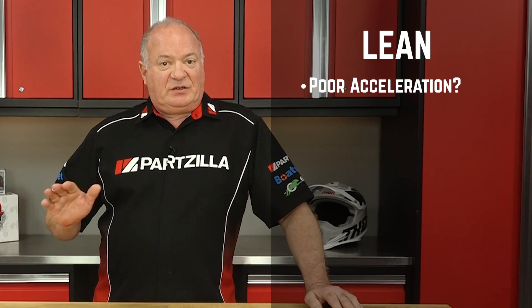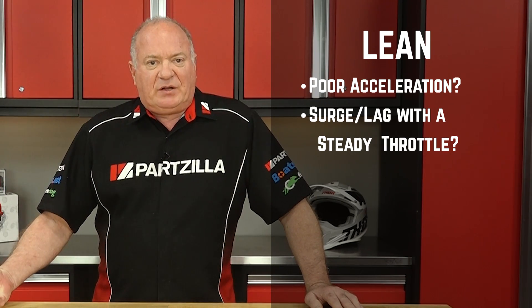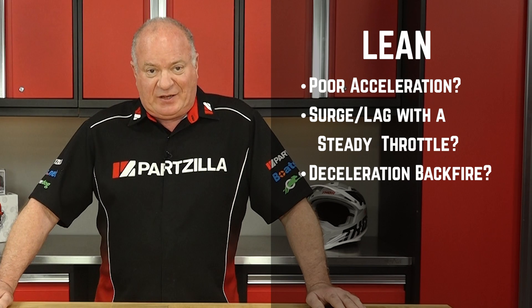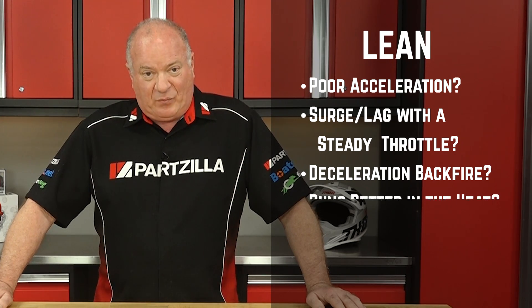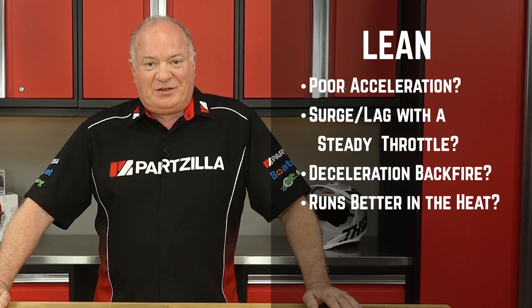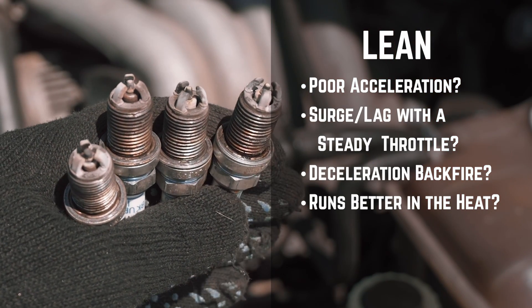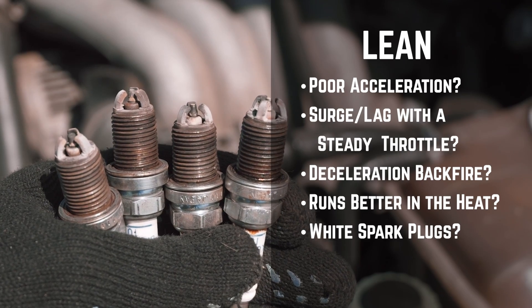Now let's look at the other side of the coin — what would a lean running engine look like? From a throttle standpoint, it might be hard to get on it really quick and it won't accelerate like it should. You might also feel the engine surging and then lagging as you hold a steady partial throttle. As for the exhaust, you'll probably get some backfires on deceleration, and your motor will probably run better on warm days than cold because the warm air is less dense and it helps bring the air-fuel ratio closer to where it needs to be. And finally, if the spark plugs look white and flaky, that's a sign that your carb is running too lean.